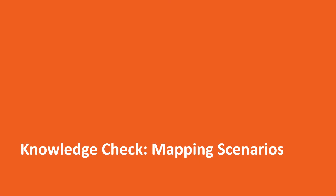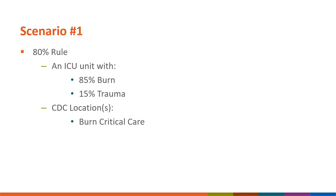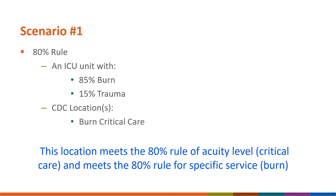Now that we have covered the introduction to location mapping in NHSN, let's go over some common mapping scenarios encountered by users and provide recommendations for mapping based on the information we have learned today. This is a simple example of how to apply the 80% rule when mapping a new location in the NHSN application. Let's say you have an intensive care unit where 85% of patients are burn patients and 15% are trauma patients. After reviewing the information, this unit meets the 80% rule for acuity level because 100% of patients are critical care patients, and it also meets the 80% rule for specific service because 85% are burn patients. This unit should be mapped as a burn critical care unit, and all patients, regardless of service type, should be included in the surveillance efforts for this location.